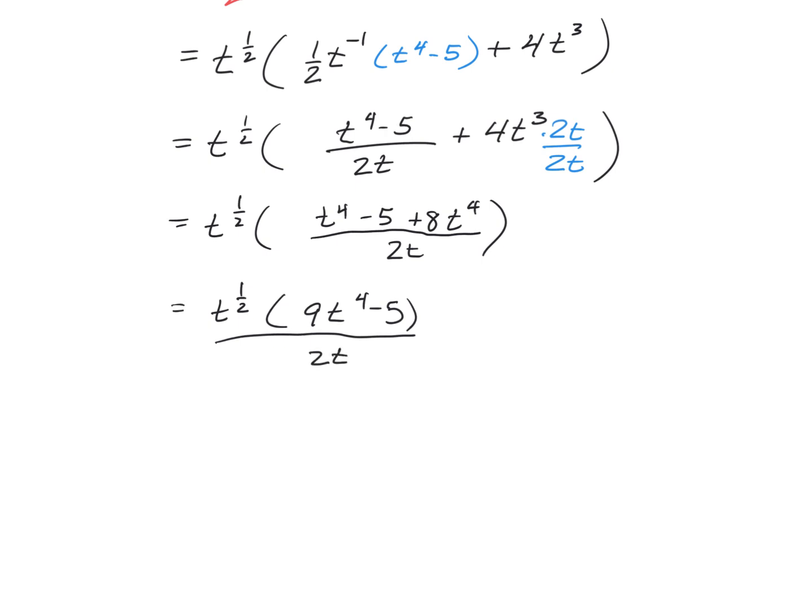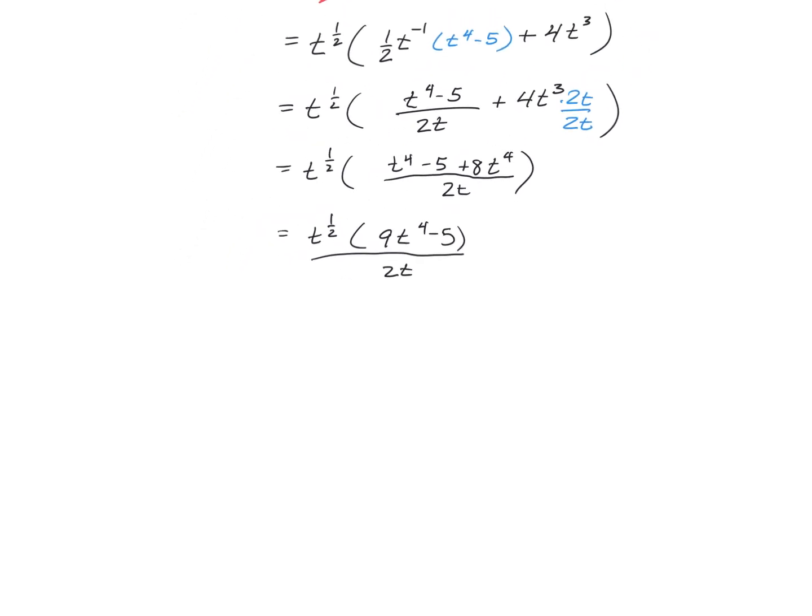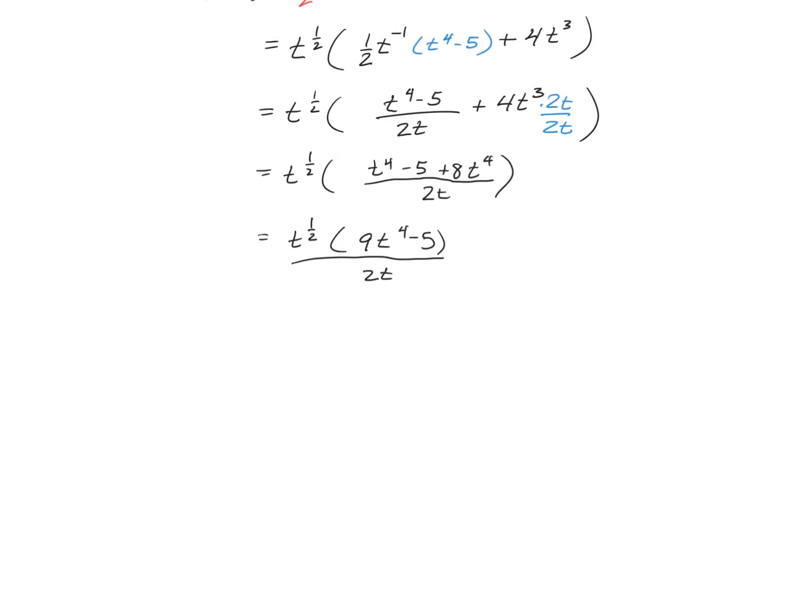There are different ways to write it. The most common way you'll see this is h'(t) = √t(9t^4 - 5)/(2t) as a final answer. The idea here is that when you have a final answer written this way, it's really easy to set it equal to zero and solve for those t values by just inspecting the derivative.